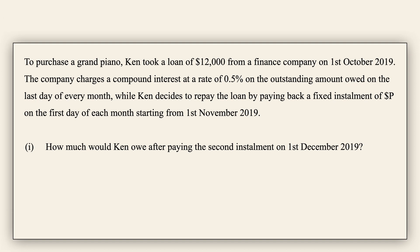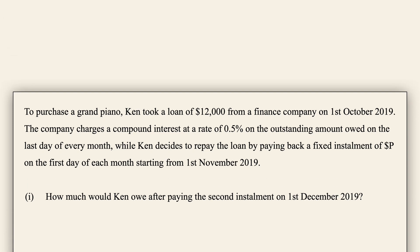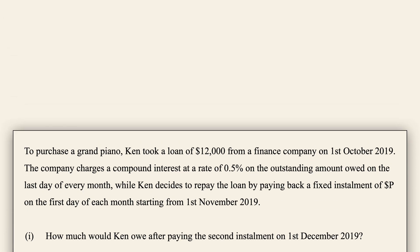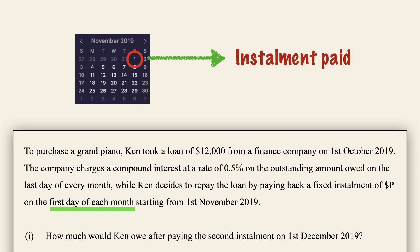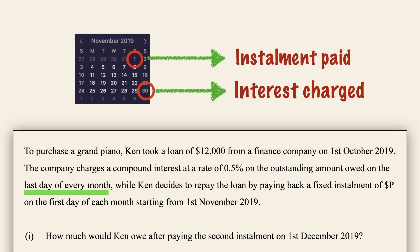Before we jump into the question, always understand at which point in the time period the installment is paid, and at which point the interest is applied. In this case, the first day of the month indicates when an installment is paid, while on the last day of the month, an interest of 0.5% is applied to the loan.